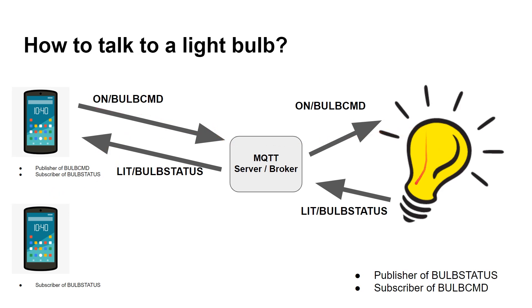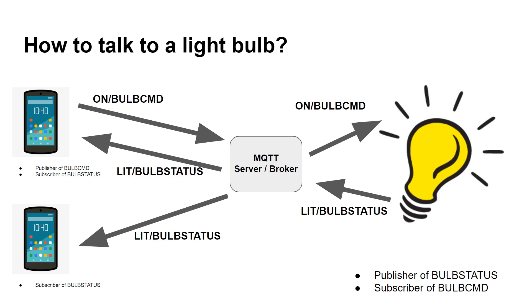The light bulb sends back 'lit' on bulb status. But because now there are two subscribers to bulb status, there's another message sent to the other smartphone. On its app, on its interface, it can show that the light bulb has been lit up, even though it wasn't the actual device that issued that command in the first place.